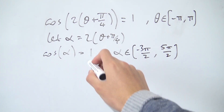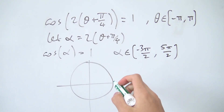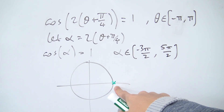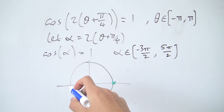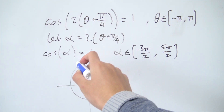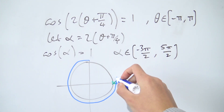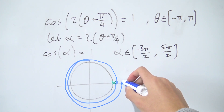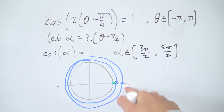We need to find where cos(α) = 1. Cosine represents the x-value on the unit circle, so we're looking for points with x = 1, which only occurs at angle zero (and multiples of 2π). Our domain runs from −3π/2 to 5π/2, meaning we make about two laps around the circle. Starting at −3π/2, we walk around and pick up a solution at zero, then continue to pick up another solution at 2π before reaching 5π/2. So even though there's only one point where cosine equals one, we get two solutions because we traverse the circle twice.